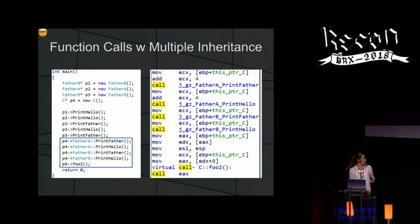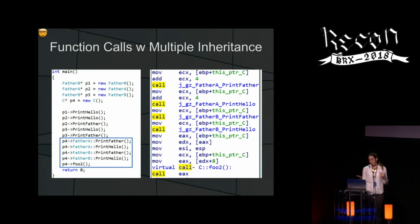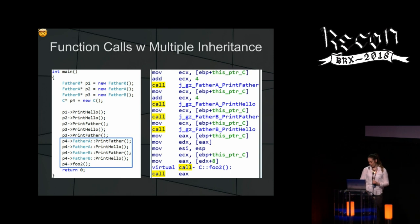But there is also the virtual call. Because C implements the foo2 function, you need the Vtable in order to understand who you want to call. In the assembly, as you can see, there is a call for C's foo2 using the Vtable of C.